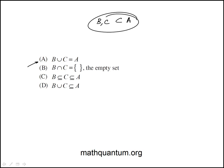So I'll just start with all the choices. B union C is A. Well, not necessarily, because you could have elements in A that are not present in either B or C.